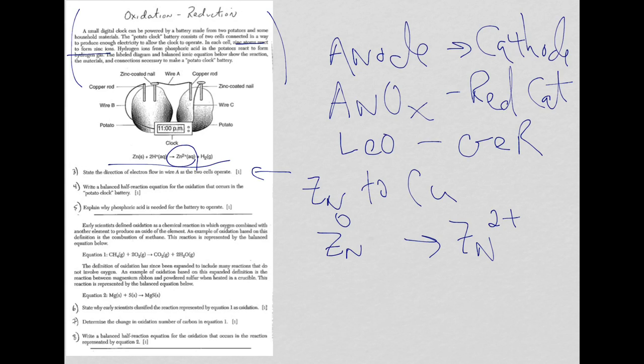Okay. So, it has to balance in terms of mass and charge. I have one zinc on both sides, but I'm going from a zero charge on the left to plus two on the right. So, of course, zinc has lost two electrons. So, now I have my balanced half-reaction.